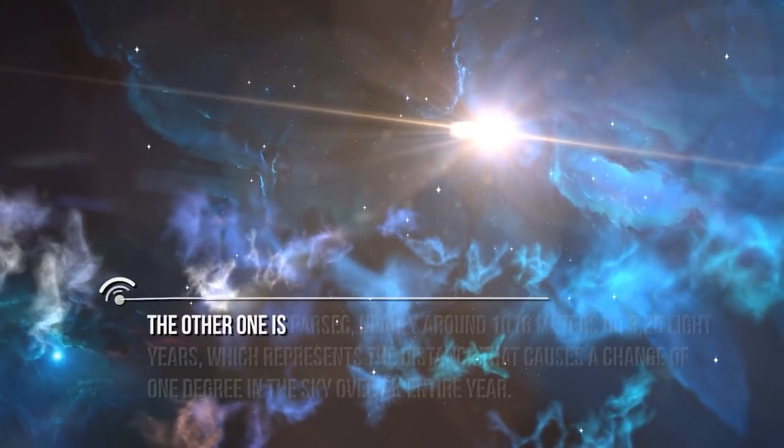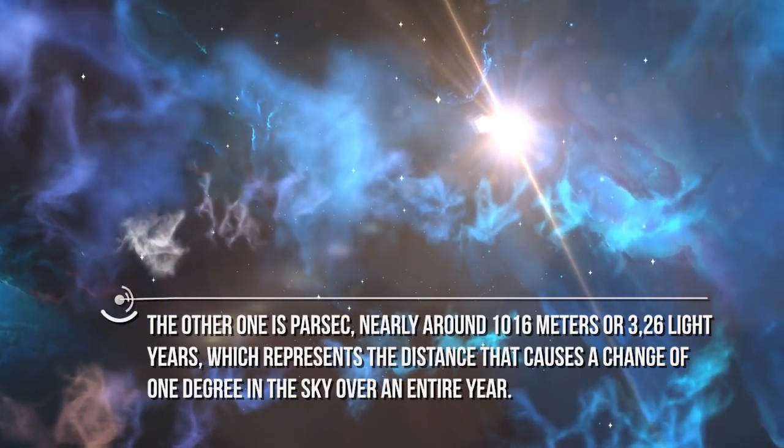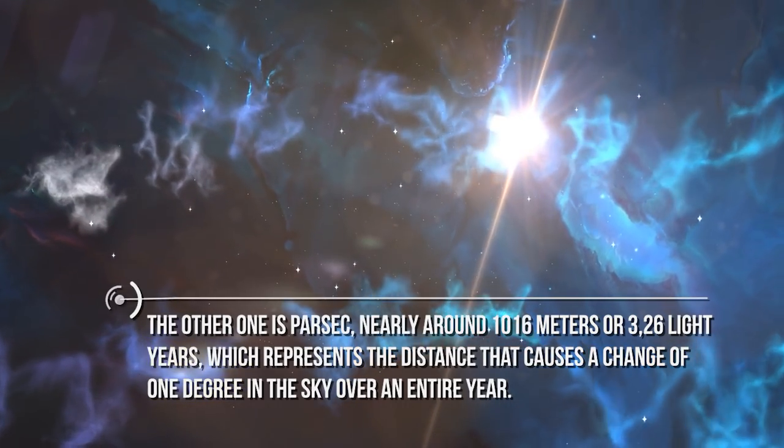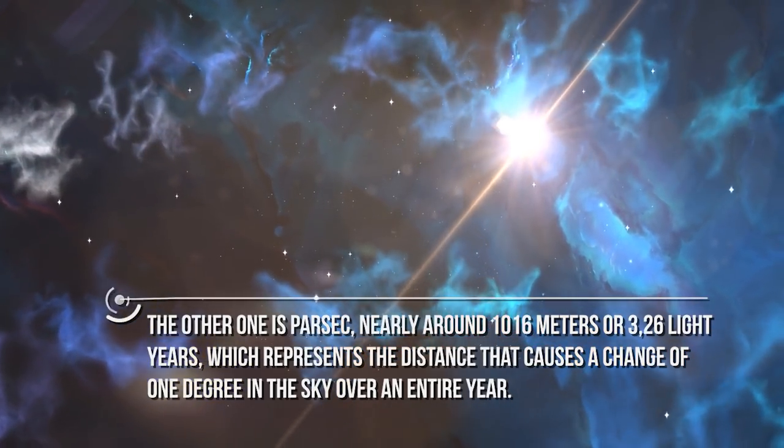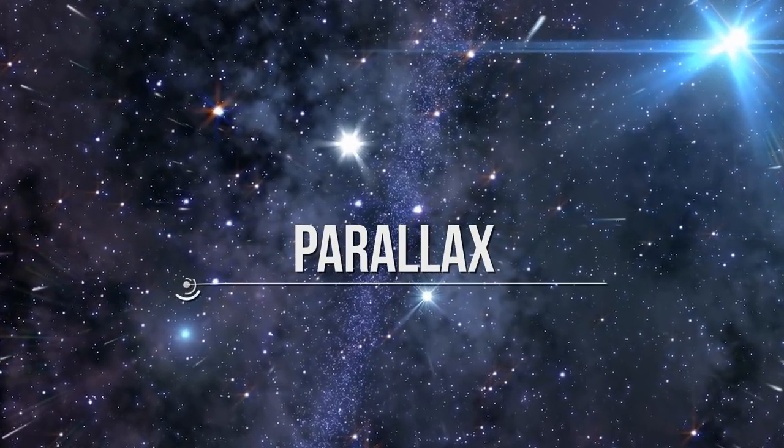The other one is parsec, nearly around 10 to the 16th meters or 3.26 light years, which represents the distance that causes a change of one degree in the sky over an entire year. This phenomenon is also known as parallax, but we'll discuss that later.